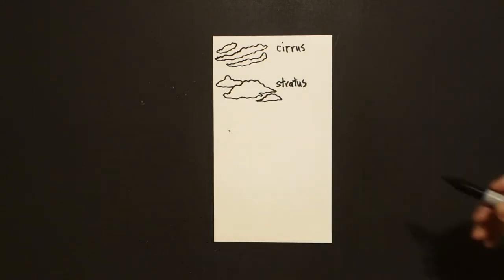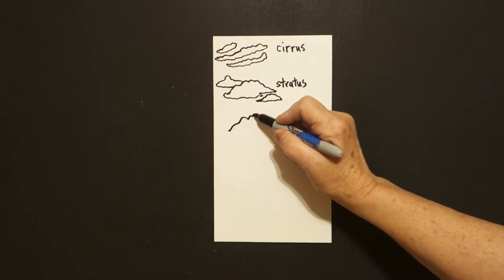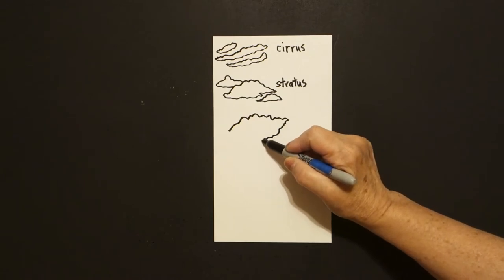Next, put a dot and we're just going to draw a curve line up, wavy line, curve line, wavy line, out, back, down, up and connect.